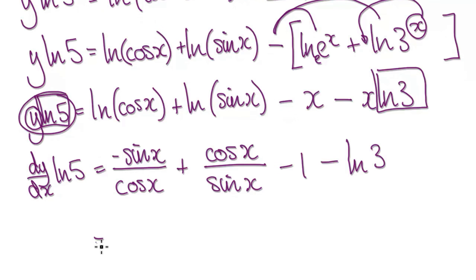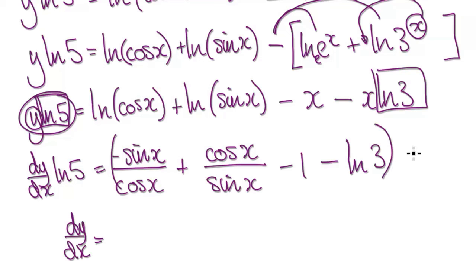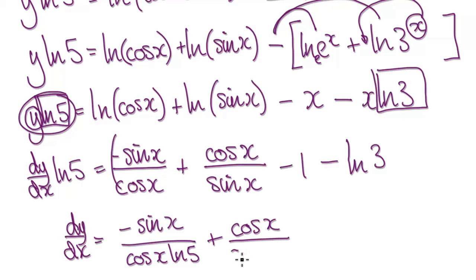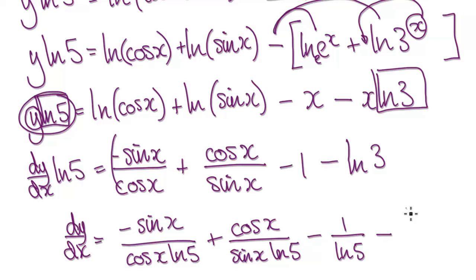Dividing both sides by natural log of 5, dy by dx equals: minus sin x over cos x times natural log of 5, plus cos x over sin x times natural log of 5, minus 1 over natural log of 5, minus natural log of 3 over natural log of 5. This is our final answer.